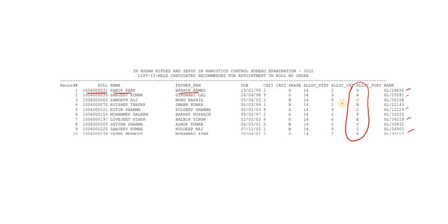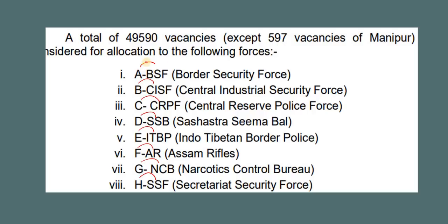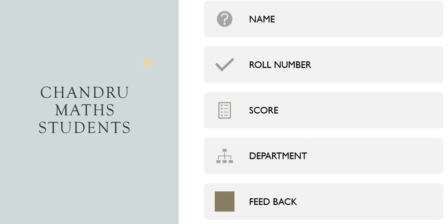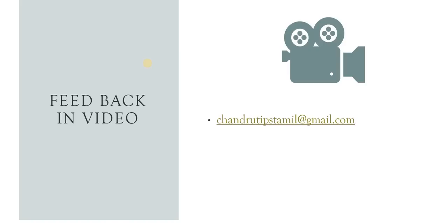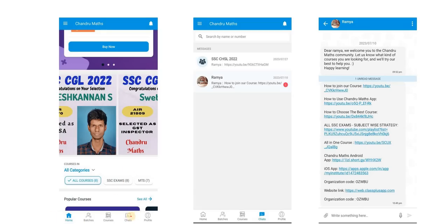If you have a search option, you can select the results. For example, Sanjeev Kumar — you can select the results, B is BSF. You can select and check the results. If you are a student, you can use the chat button.